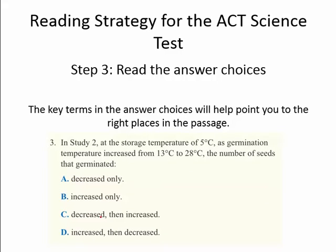Step three is to read the answer choices, which also provides key terms that will point you to the right place in the passage. Here are our answer choices for the sample question. The options have to do with whether the number of seeds decreased, increased, or decreased then increased and vice versa. From the answer choices, we know we're going to be looking for a trend in the respective chart or graph in Study 2 — are the seeds increasing, decreasing, or doing a little of both?